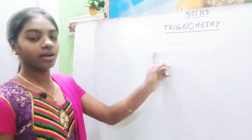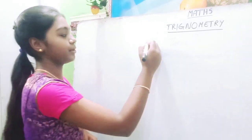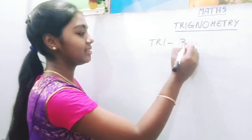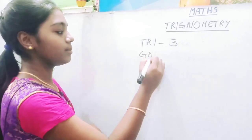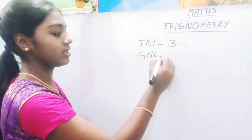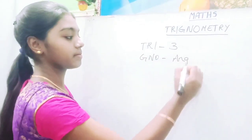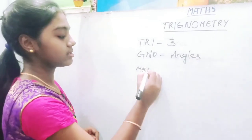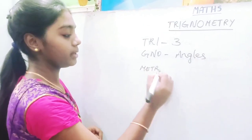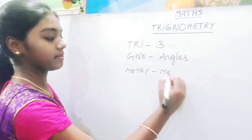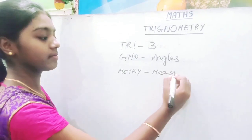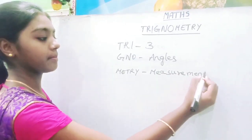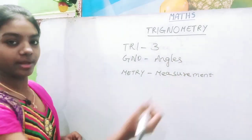Let's divide the meaning of trigonometry and learn about it. The word 'tri' means three, 'gono' means angles, and 'metri' means measurement. So trigonometry means three angle measurement.